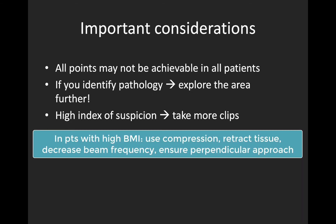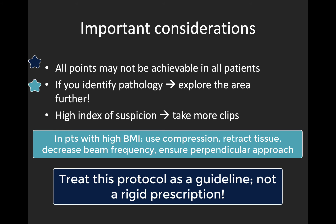A few important considerations before the example scan. All points may not be achievable in all patients — in addition to posterior points being challenging, you may find your L2 point gets obscured by the heart. Importantly, if you find pathology, explore the area further — if you see some B-lines or a bit of consolidation, slide your probe around to get a good sense of the extent and fully characterize it. This protocol is a guideline to ensure you've surveyed all areas, not a rigid prescription. If you have a high index of suspicion for a particular pathology, take time to explore the area in more detail and take more clips.